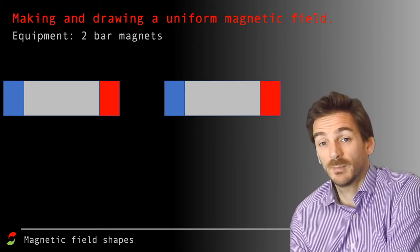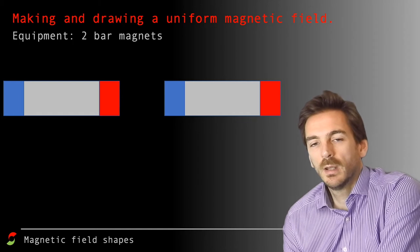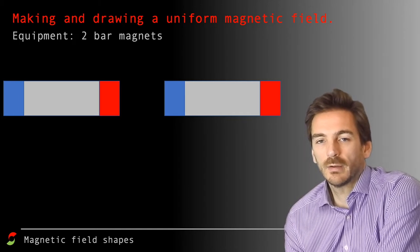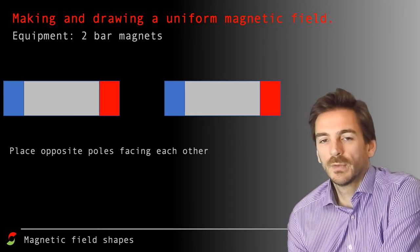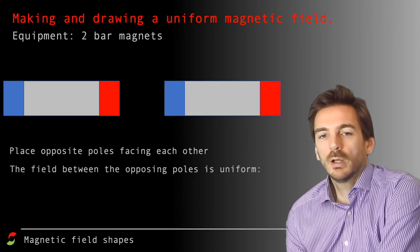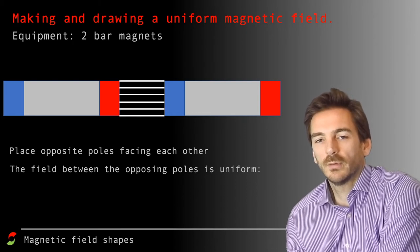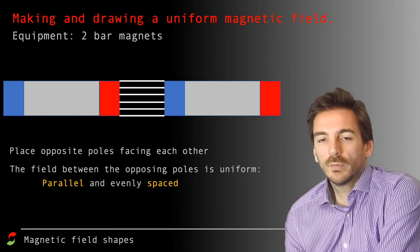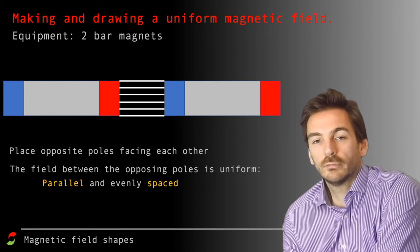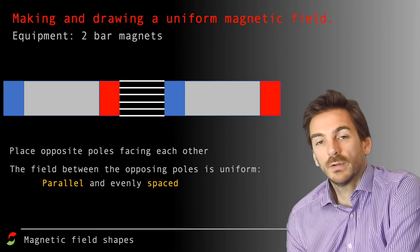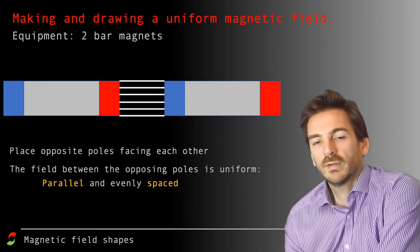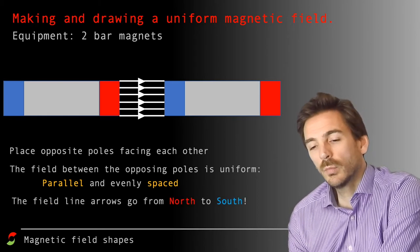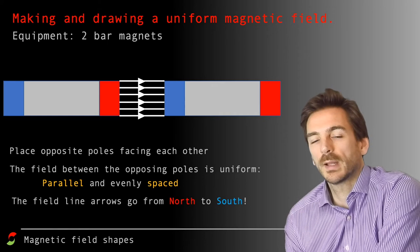Here we've got two bar magnets, and the poles are opposing. So red is north and blue is south. Once they're facing each other, the field lines in between are drawn like this. So uniform, they're evenly spaced and they're parallel. All we need to do then is add in the arrows to show the direction of the magnetic field. Remember, they go from north to south, north being red, south being blue. So they go in this direction. So that's one way of producing a uniform magnetic field.